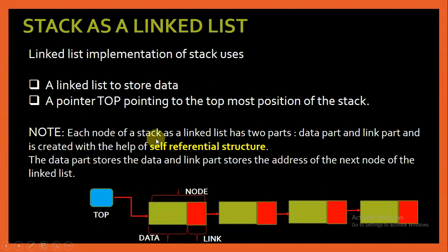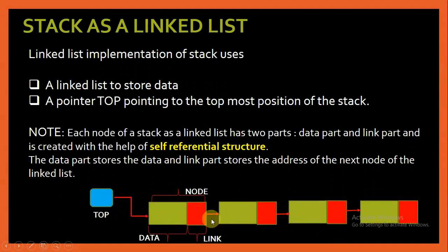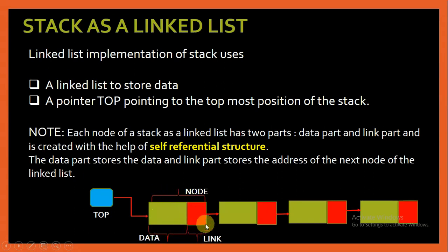Each node of a stack as a linked list has two parts: data part and the linked part. In this image you can see a memory depiction of a linked list. It is a collection of nodes and the address of the first node is stored in a pointer top. The data part contains the information and the linked part contains the address of the next node.